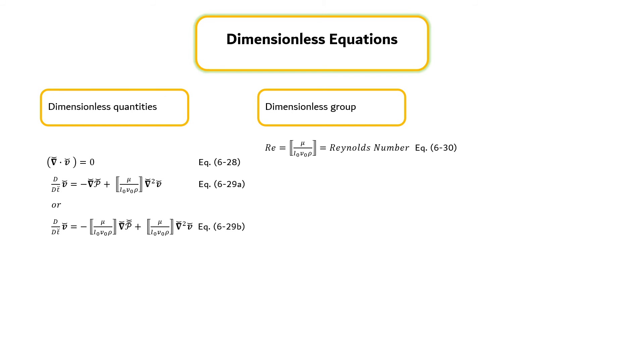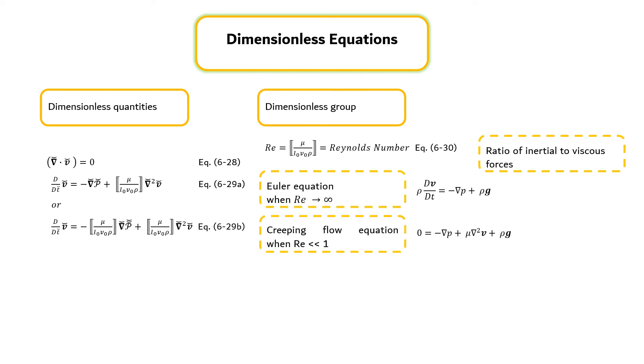The magnitude of this dimensionless group gives an indication of the relative importance of inertial and viscous force in a fluid system. From the two forms of equation 6-29, we can gain some perspective on the special forms of the Navier-Stokes equation. Equation 6-29 gives the Euler equation when the Reynolds number approaches infinity, whereas equation 6-29b gives the creeping flow equation when the Reynolds number is less than 1.